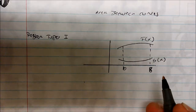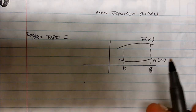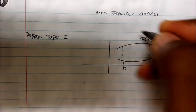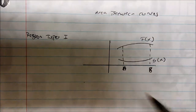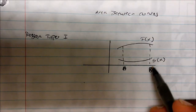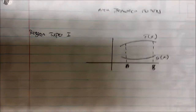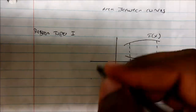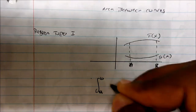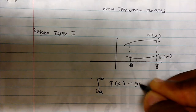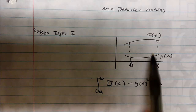In this video we're going to talk about the area between curves. We have two functions — f(x) on top and g(x) on the bottom — and integration is from a to b. This is Type 1, which means we're integrating along the x-axis. For the area between curves, the integral is simply given from a to b of f(x) minus g(x) dx.